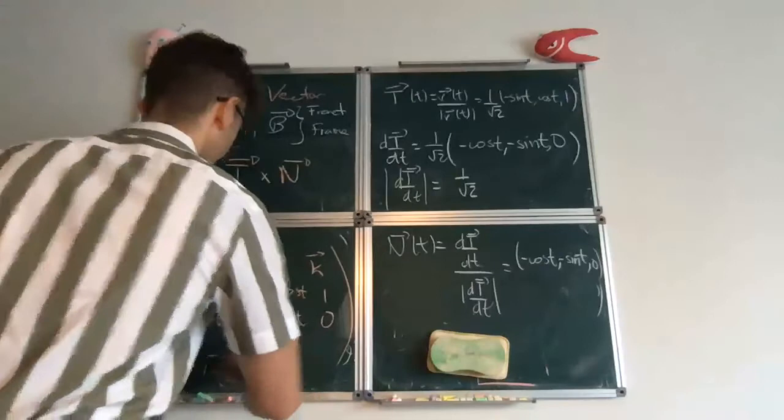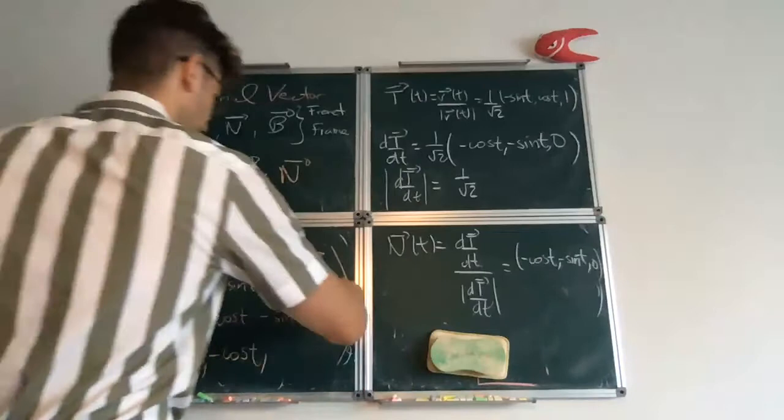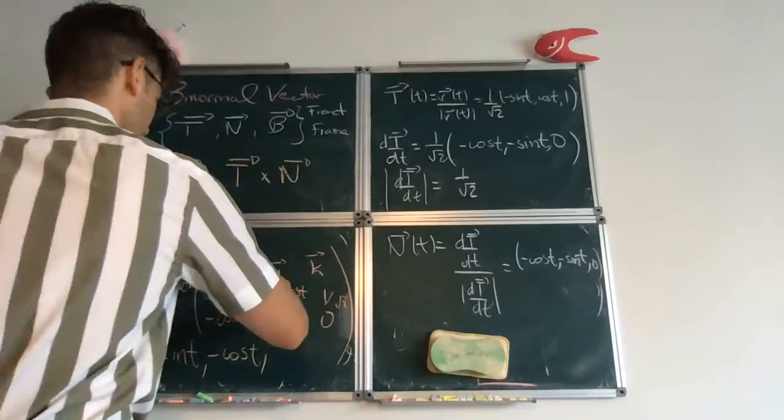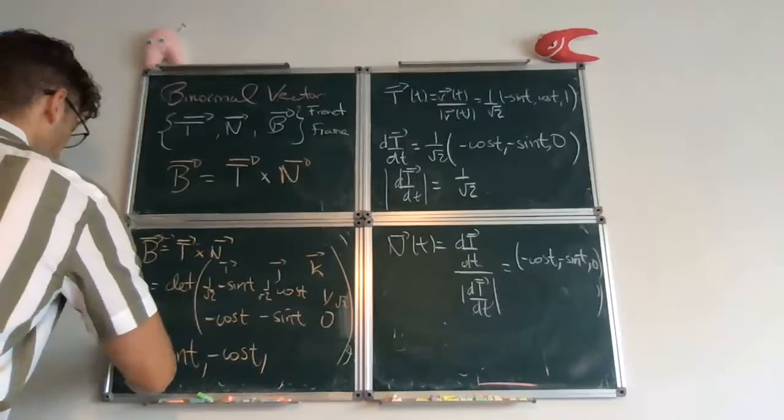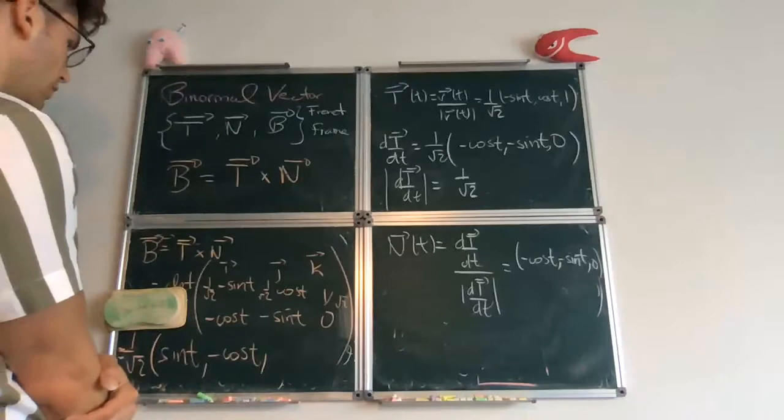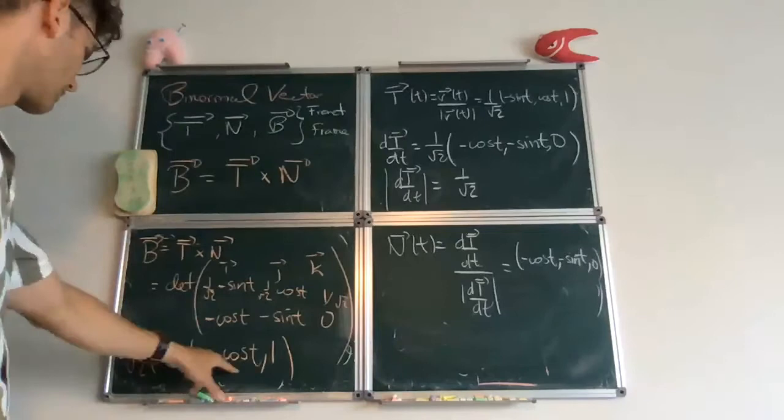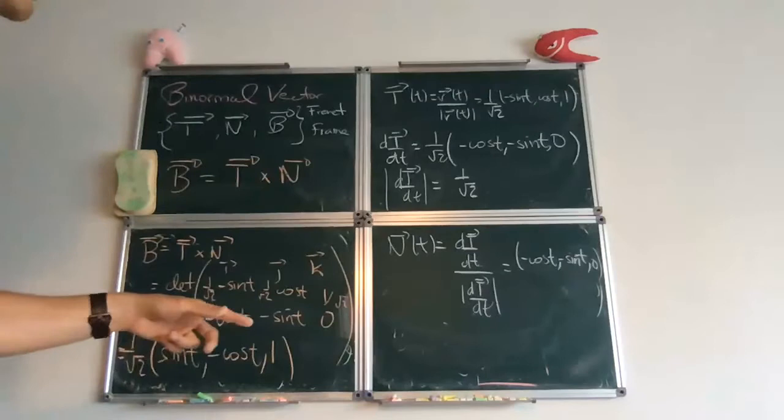Okay, I think minus cosine of t, I'll check the sign in a second. Yeah, I think it's fine. And then, oh sorry, there should be a 1 over root 2 here. So you can factorize a 1 over square root of 2. It will be there everywhere, so that's not a problem. And then the last one is 1. Yes. So again, this has norm root 2 over root 2, that's 1, so it's a unit vector.